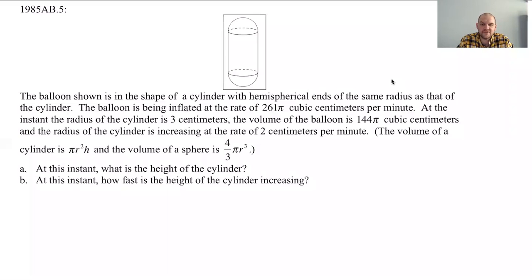Okay, in this video, we are going to try to do 1985 AB5. So that's number five on the AP calculus exam, Calc AB exam, in 1985, which was ages ago, but it doesn't mean the math doesn't work anymore. So let's see if we can do it. This is a related rates problem.